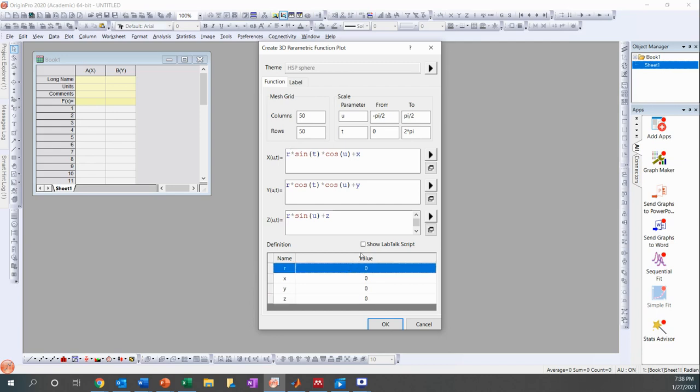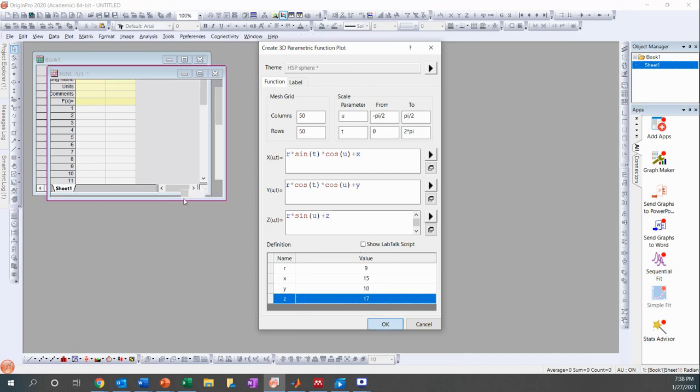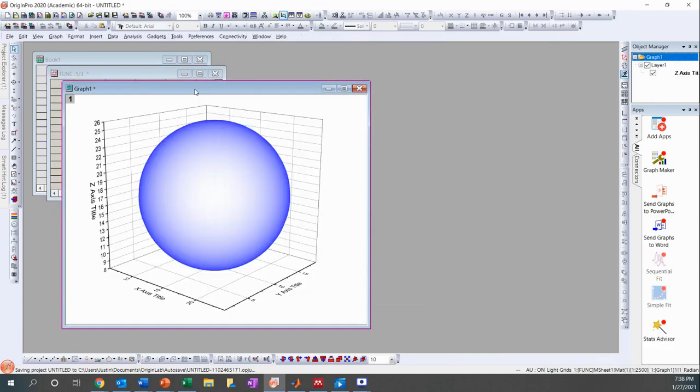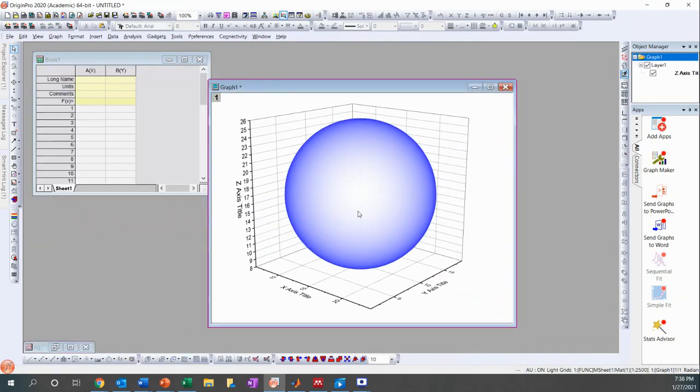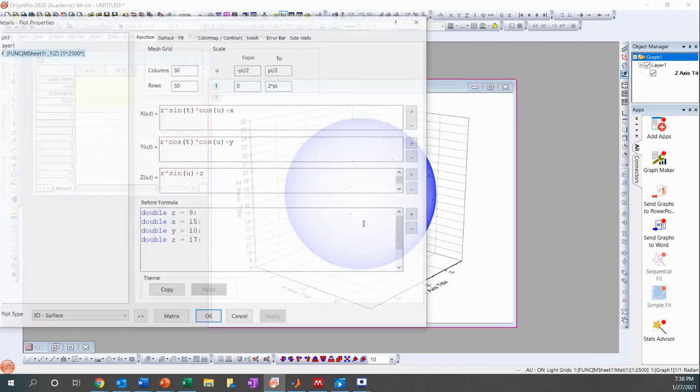So for this particular data set, let's say we have a radius of 9, dispersive value of 15, polar value of 10, and hydrogen bond value of 17. And we just click OK. And that creates a matrix. You can just kind of ignore that, put that off to the side, and we get a little sphere.